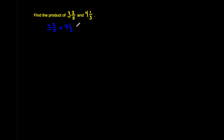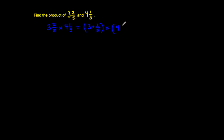Since they're the sum of a whole number and a fraction, we can write them as such. So we have three and two-fifths — written as three plus two-fifths — multiplied by another mixed number which is also the sum of a whole number and a fraction, so we're multiplying by four plus one-third.